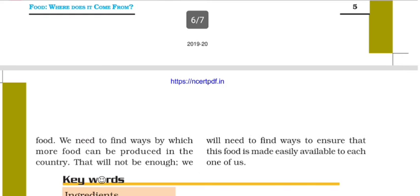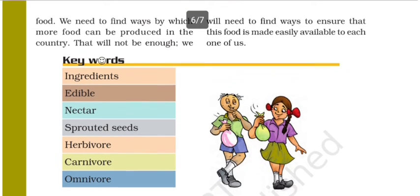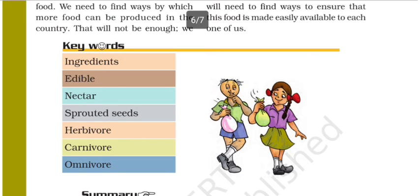We can give positive participation by not wasting the food that we leave. Now for keywords and homework: ingredients, edible, nectar, sprouted seeds, herbivore, carnivore, and omnivore. You can search for these keywords and write them in English. This is your homework.